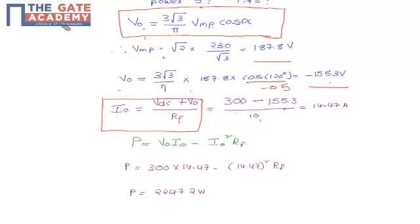The power transferred through the inverter to the AC system is the battery power minus the resistive loss: P = Vdc × I0 - I0² × RF. Substituting: P = 300 × 14.47 - (14.47)² × 10.